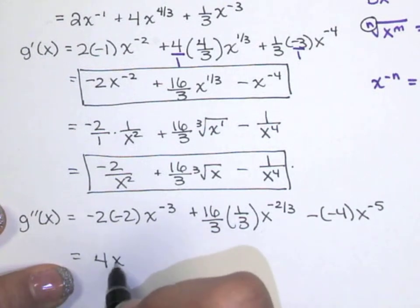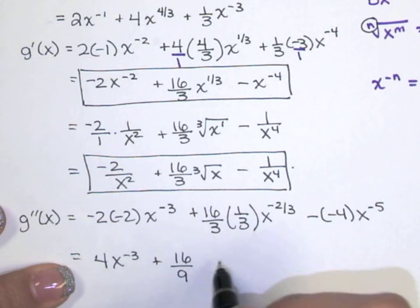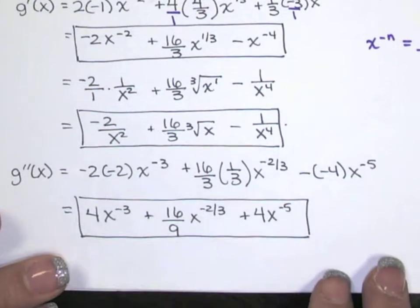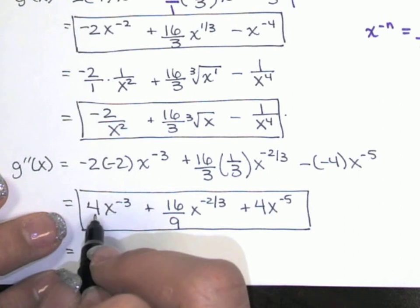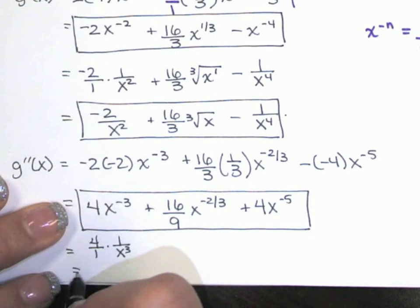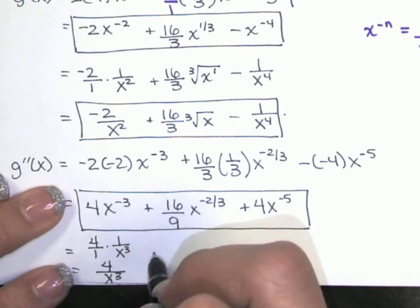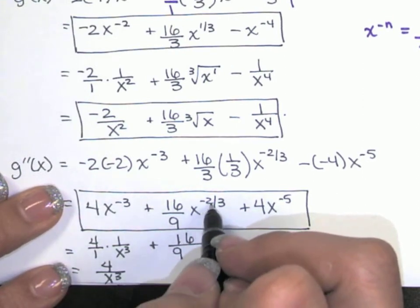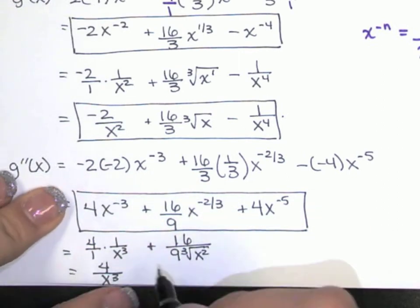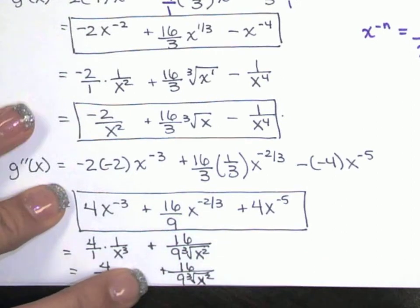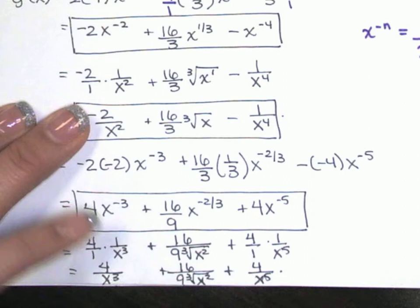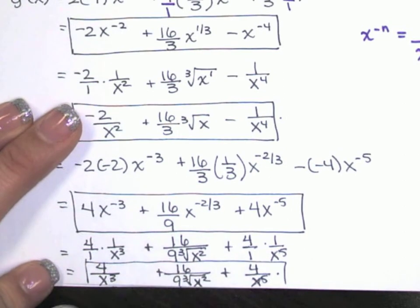So that's our second derivative, just not simplified yet. We multiply the coefficients to simplify. If you're checking in the back of the book: that first term is 4 over 1 times 1 over x cubed, so they'll have 4 over x cubed. Over here, I've got 16 over 9, and x to the two-thirds is a third root of x squared — they'd write it like that. And this one is 4 over 1 times 1 over x to the fifth, giving 4 over x to the fifth.